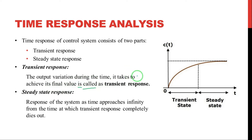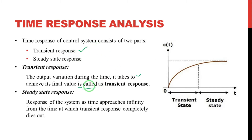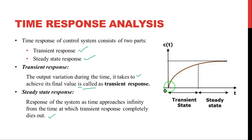Transient response means the output variation during the time it takes to achieve its final value. After getting its final value — the steady state position — the remaining time is the steady state response. The steady state response is defined as the response of the system as time approaches infinity, from the time at which the transient response completely dies out.